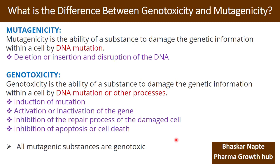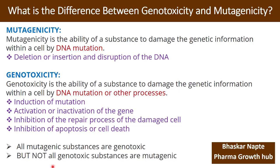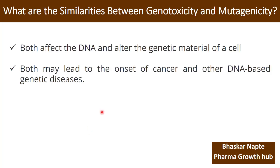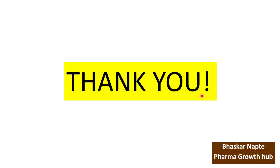A very important statement: all mutagenic substances are genotoxic, but not all genotoxic substances are mutagenic. Regarding similarities between genotoxicity and mutagenicity — there are two: both affect the DNA and alter the genetic material of a cell, and both may lead to the onset of cancer and other DNA-based genetic diseases. I hope you now have better clarity on when a substance can be called mutagenic or genotoxic.